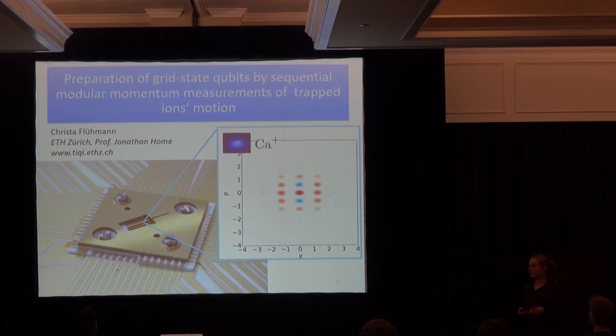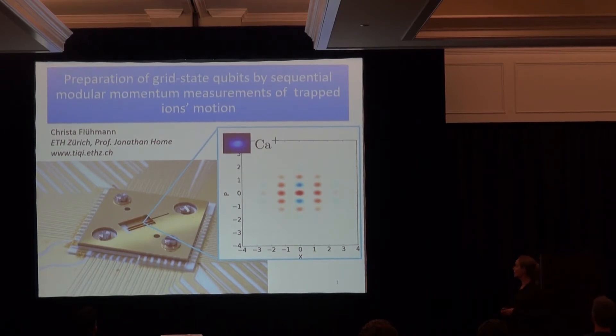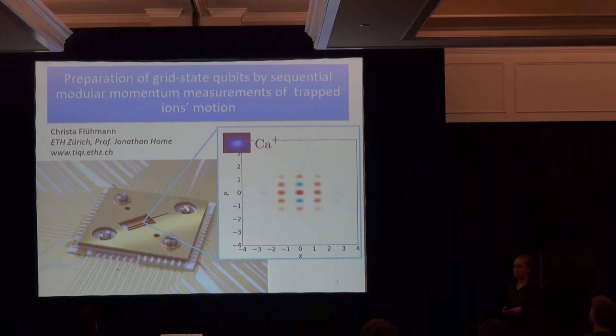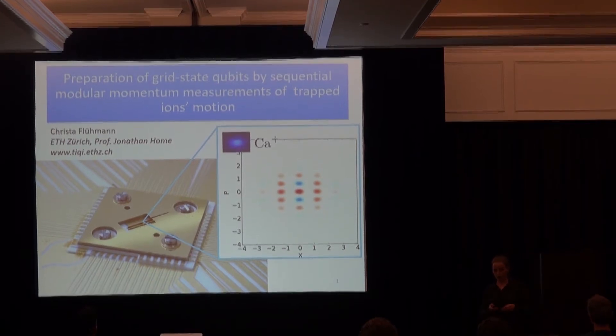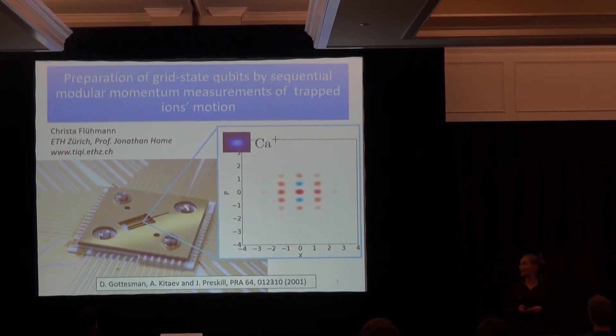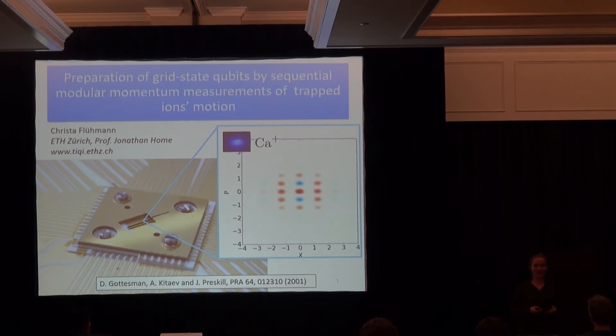I try to encode a qubit in this mechanical oscillator and the code states I'm aiming for are the so-called grid states, or most of you might better know them as the GKP states, named after the three initials of the three authors who proposed that coding scheme. They also address how to do fault-tolerant universal computing with a quantum optic setup. I'm not going so far. I really just tried to implement the code states and show some single qubit operations on them.